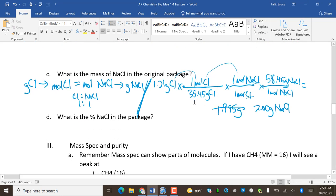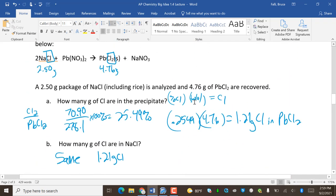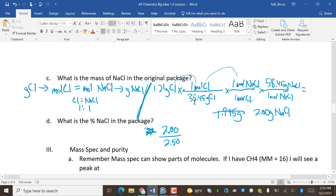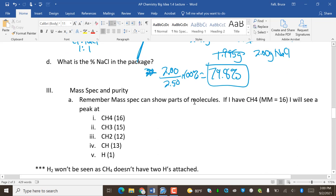And then it says, what is the percent NaCl in the package? So percent is part over total, 2.00 over 2.50. And it said the package way up here was 2.50 grams. So 2 over 2.5 times 100 divided by 2.5, and it's 79.8%.